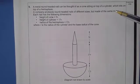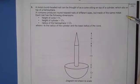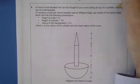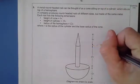Question 9 says a metal round-headed nail can be thought of as a cone sitting on top of a cylinder which sits on top of a hemisphere. Now, these things here are telling you a formula that you can make.